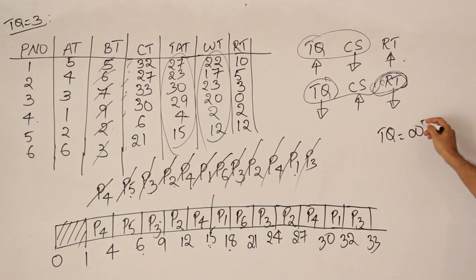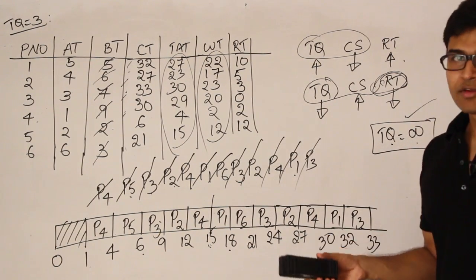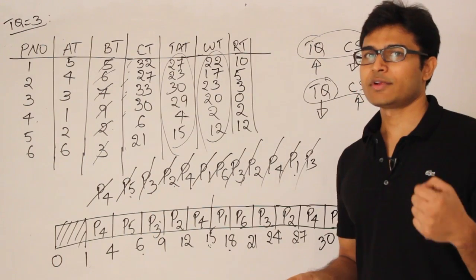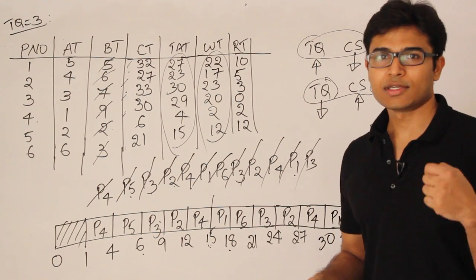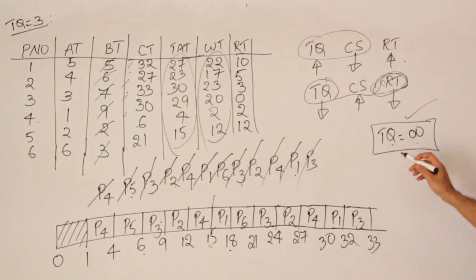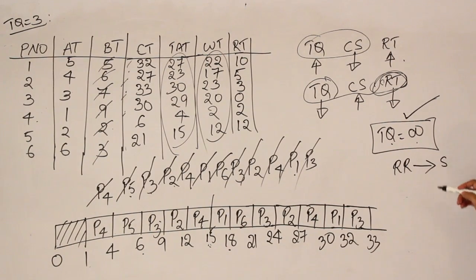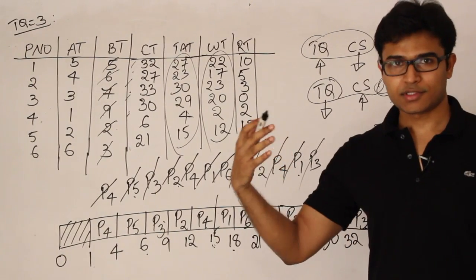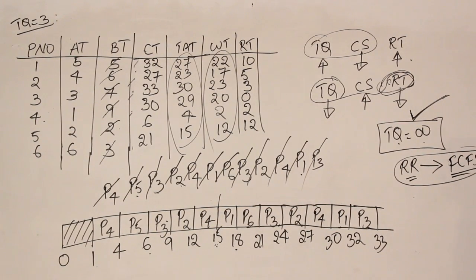If you want all processes to be very interactive, use a lower time quantum for better response time. An interesting edge case: if the time quantum is infinity, a process runs until completion once scheduled. In that case, processes are picked based on arrival time, so Round Robin effectively becomes First Come First Served. As you keep increasing the time quantum, Round Robin will slowly approach and eventually become FCFS completely.